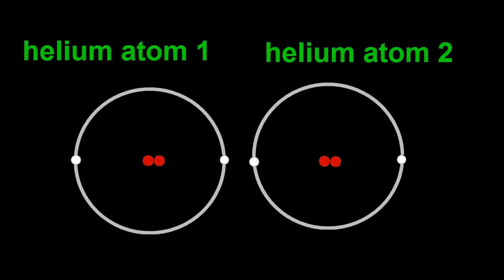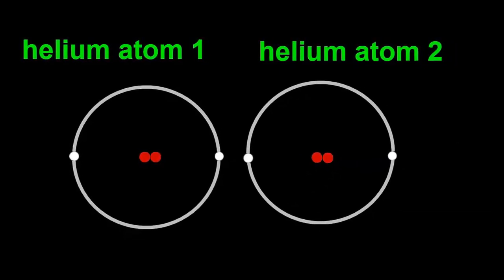Now let's see if helium can bond with itself, like hydrogen can. Helium, atomic number 2, is made of two protons and two electrons. When we bring two helium atoms together, we find a big difference compared to hydrogen atoms. Can you tell what it is?